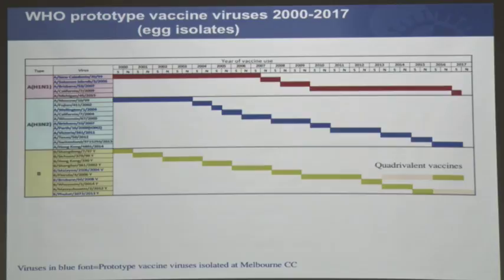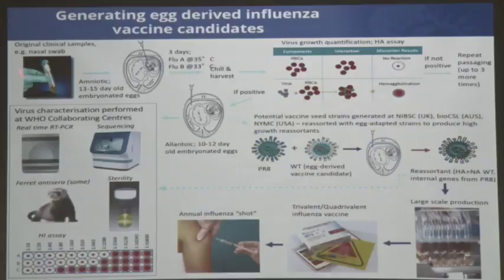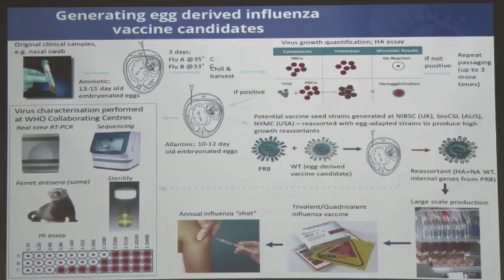We get an original clinical sample from a throat swab or a nasal swab, inoculate that into embryonated hen's eggs, collect the virus, and characterize it by hemagglutination, then select a vaccine strain. It has to be reassorted to make the virus grow to high yield in eggs. That is then manufactured by the pharmaceutical industry, packaged and delivered. This process takes six months.